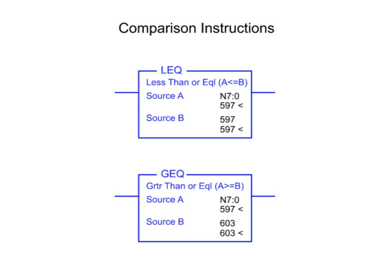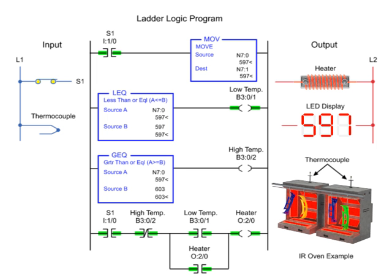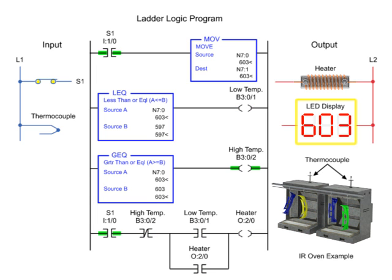A common method of temperature control is an on-off control system. Using comparison instructions in a PLC program, outputs are energized when the set point is reached. In this on-off temperature control example, the heater turns on when the temperature falls to or below 597 degrees, and turns off when the temperature reaches 603 degrees or more.